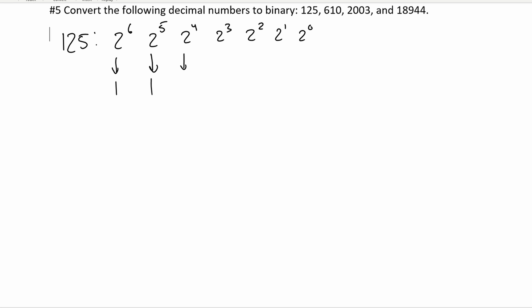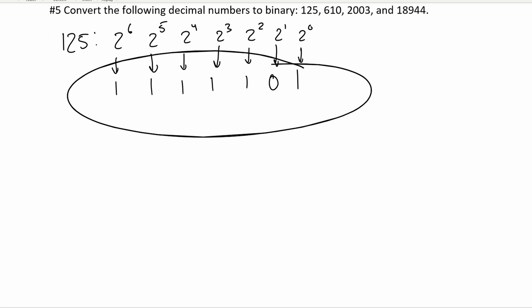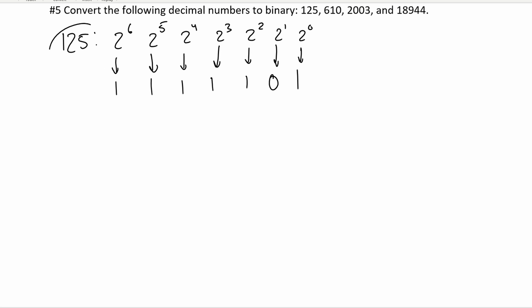2 to the 4th is 16, which is less than 29, so this is going to be in our binary number. That gives us 13. 2 to the 3rd is 8, which is in our range, so this is also going to be in here. Subtracting 2 to the 3rd leaves us 5. 2 to the 2nd is 4, which is in our range, so we include that. Subtracting leaves us 1. 2 to the 1st is 2, which is slightly greater than 1, so we do not include that. 2 to the 0th is just 1 — that's perfect. And this is how we write the binary form for the decimal number 125.